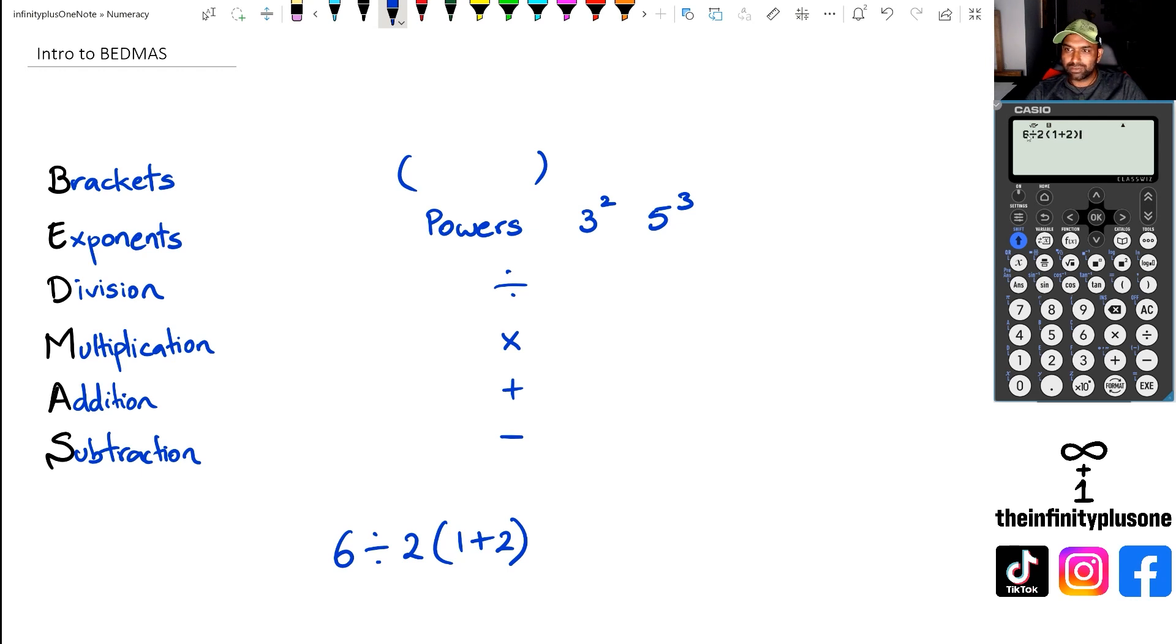So because according to BEDMAS, you've got to go division first. So if you do divide first, you'd go 6÷2, which is 3. And then 3×3 is 9. So you should get an answer of 9. But I think that's where the issue is, right? Because when you do this, what you'll notice the calculator do is it's actually adding another bracket around the 2 and 1+2, which means the actual answer ends up being 1 in this case.